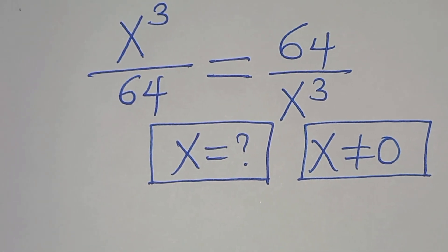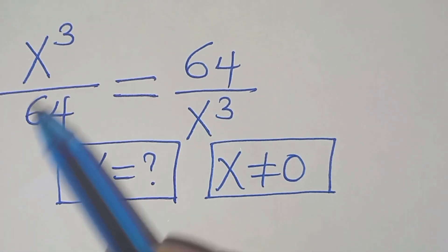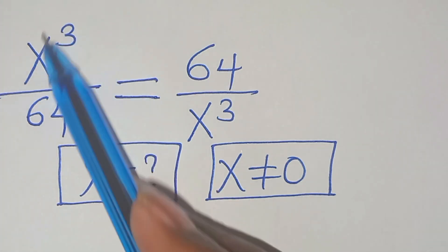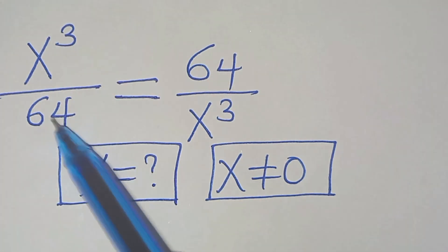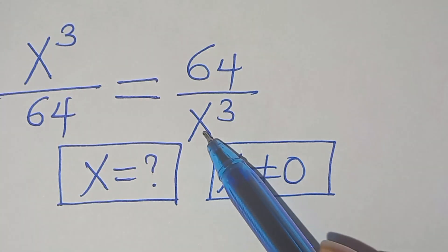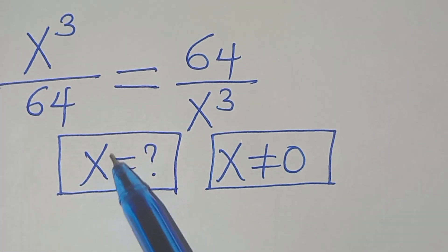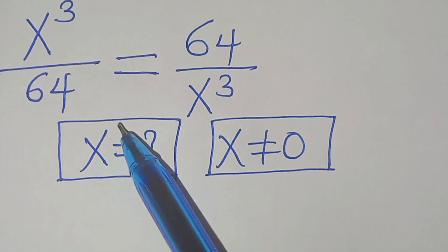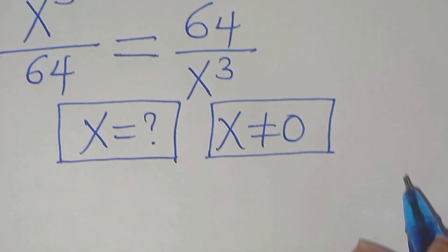Hello everyone, you are welcome to solve this nice algebra problem, which is x to the power of 3, divided by 64. This is equal to 64 over x to the power of 3. So, what are the values of x, given that x is not equal to 0?